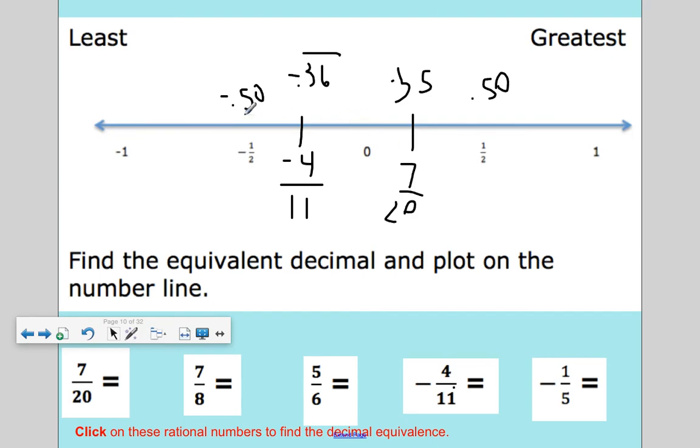So you're counting things. So this goes from least to greatest. So negative 1/2 is the least, then negative 0.36 hundredths, then 0, 35 hundredths, 50 hundredths. Or negative 1/2, negative 4/11, 0, 7/20, and 1/2. So you can tell it's going from least to greatest.